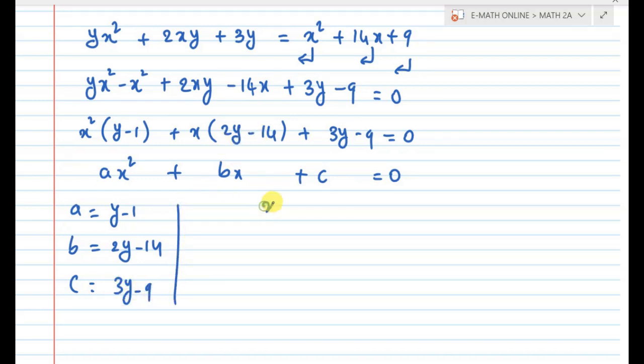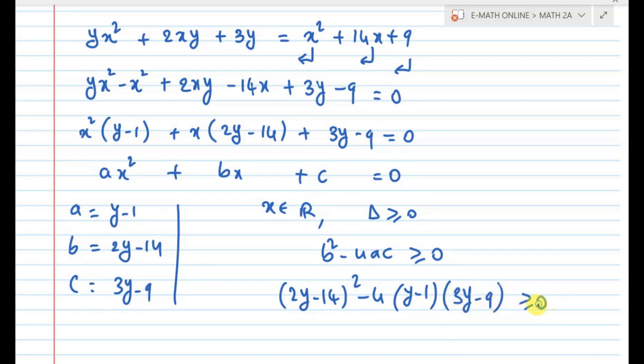Since x belongs to real numbers, delta greater than or equal to 0. Delta means b squared minus 4ac greater than or equal to 0. What is b square? (2y minus 14) whole square minus 4 times (y minus 1) times (3y minus 9) greater than or equal to 0.